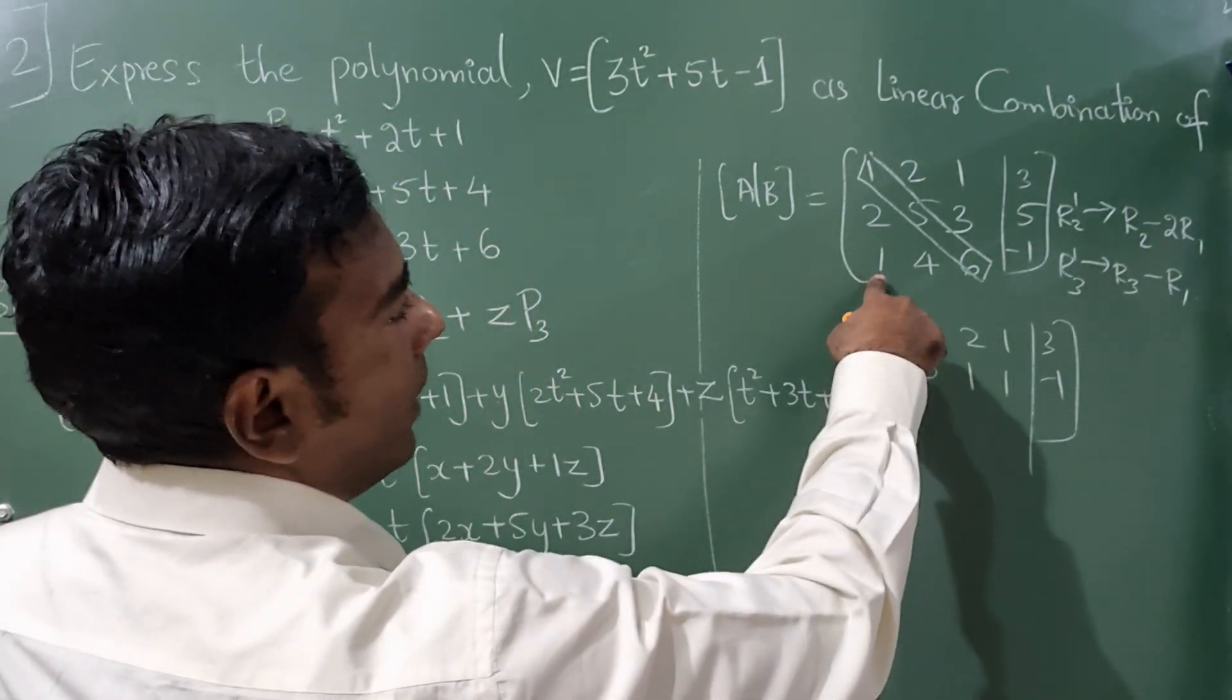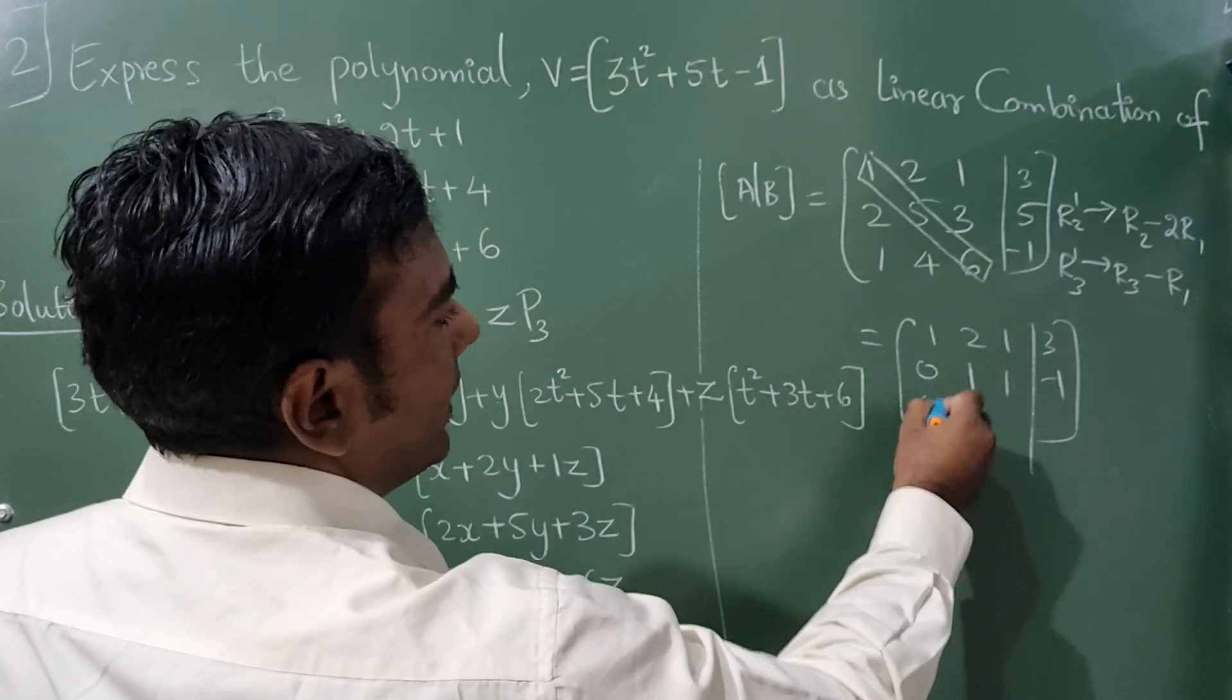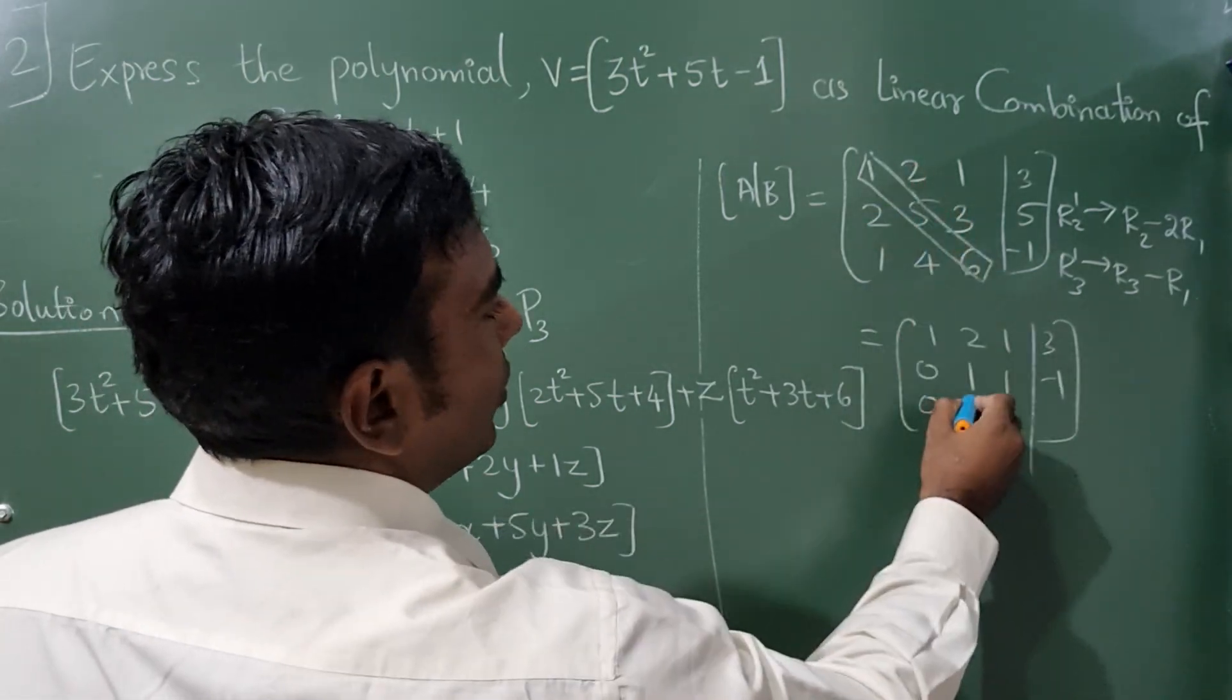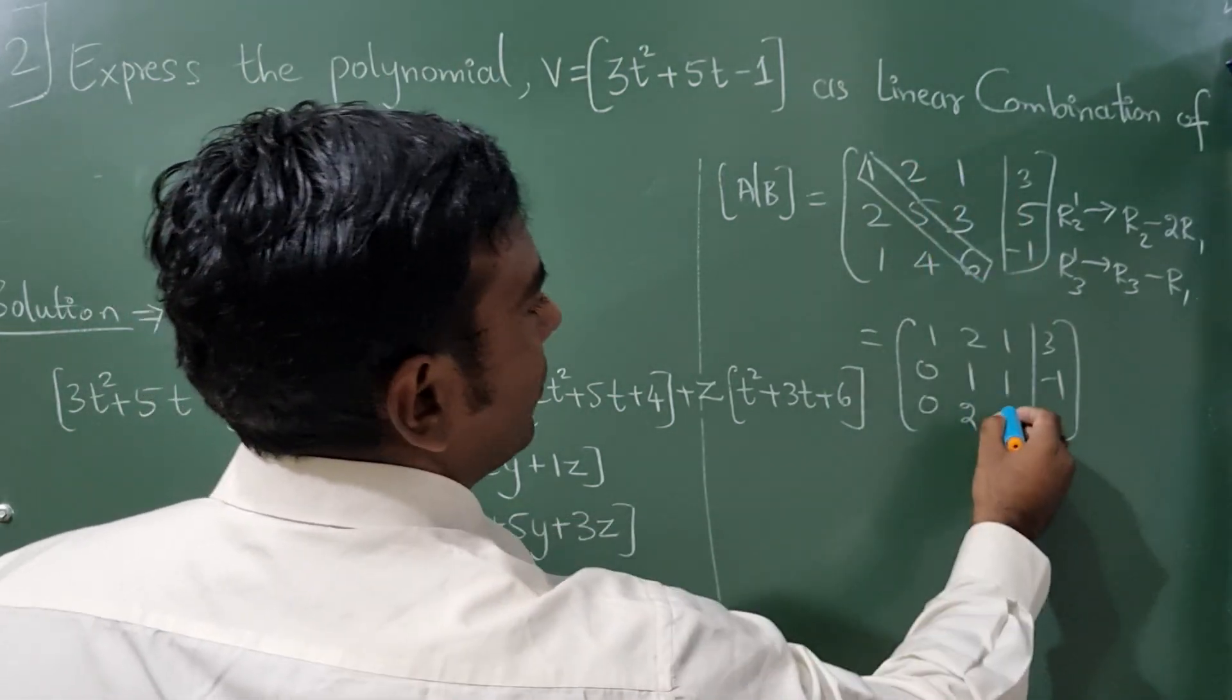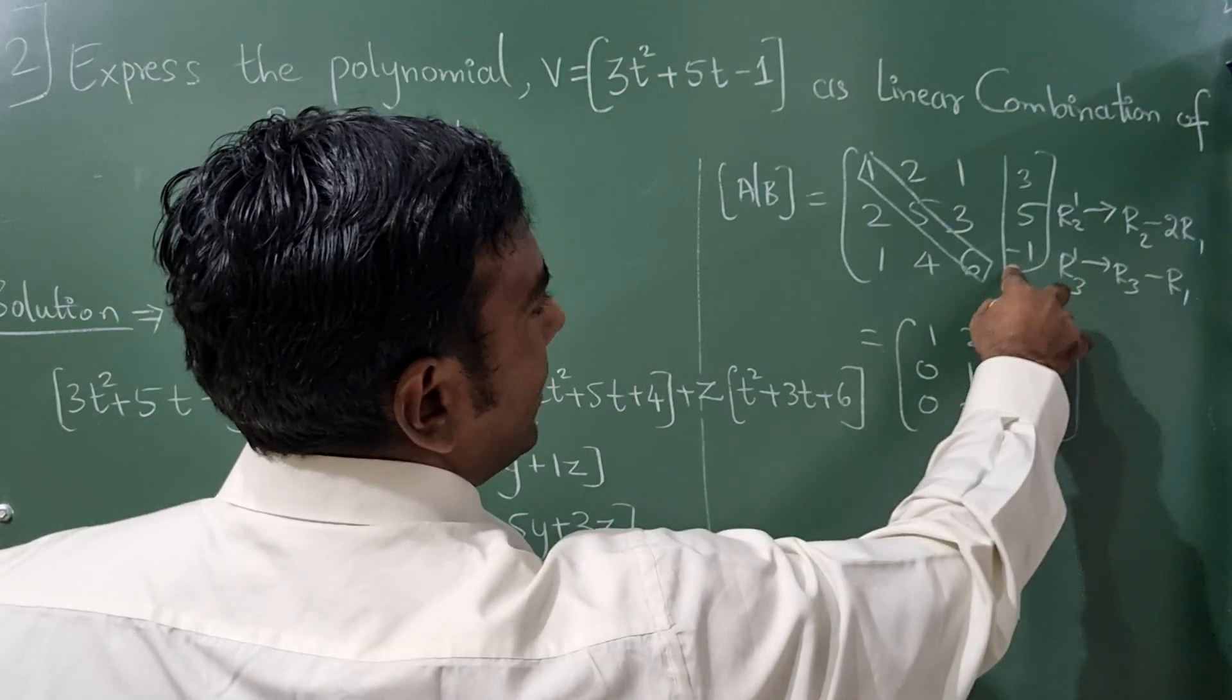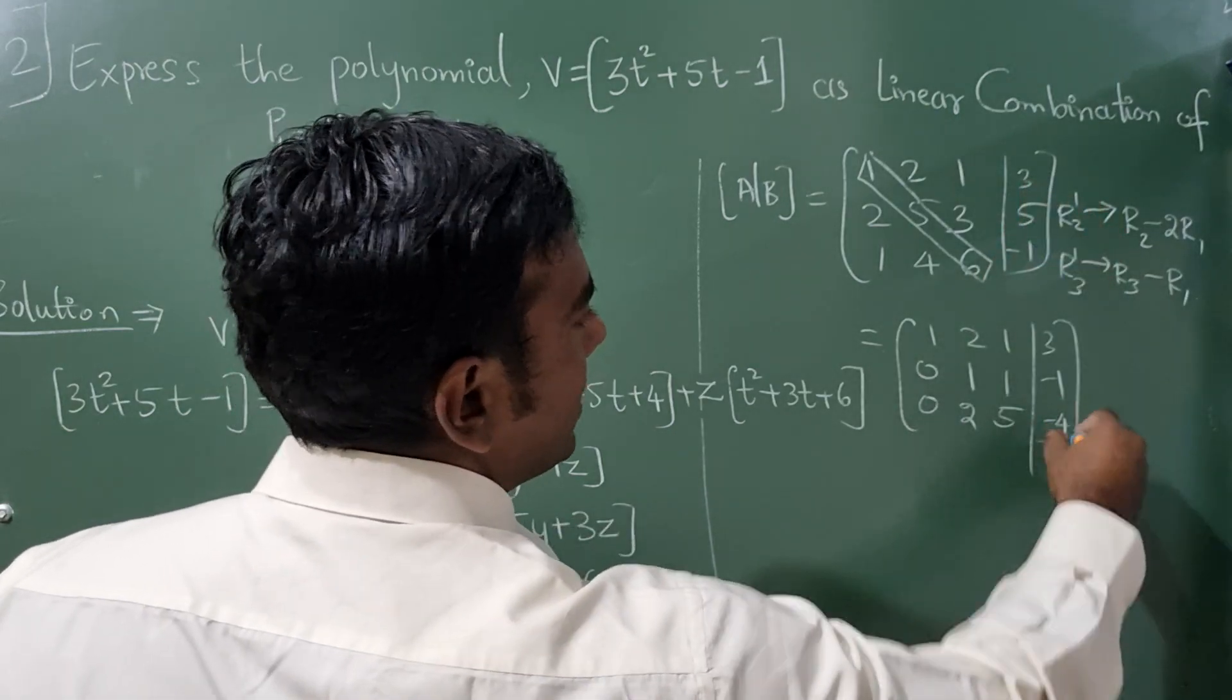5 minus 6 is minus 1. Now 1 minus 1 is 0, 4 minus 2 is 2, 6 minus 1 is 5, minus 3 is minus 4.